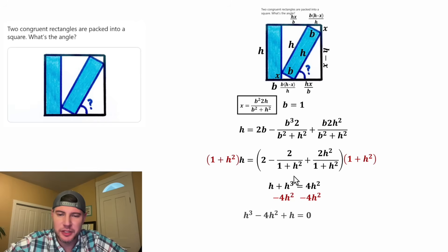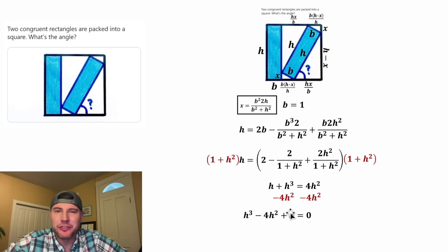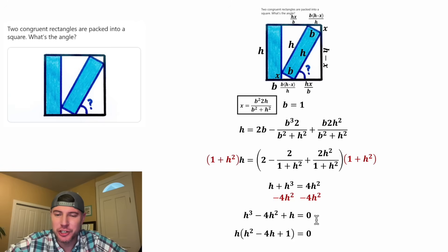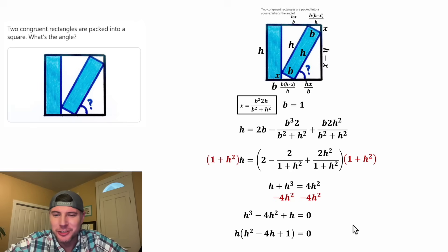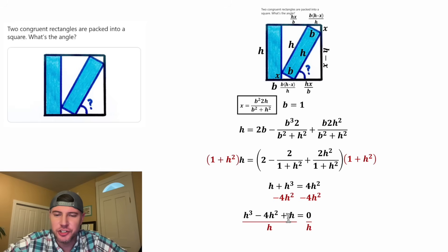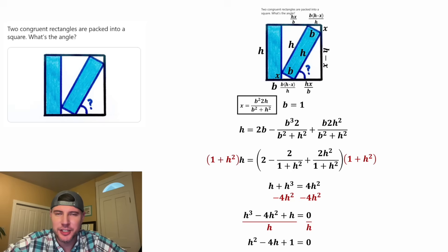Since H is not zero, we can divide by H. H³ divided by H is H², negative 4H² divided by H is negative 4H, and H divided by H is positive one, all equal to zero. So we have H² minus 4H plus 1 equals 0.